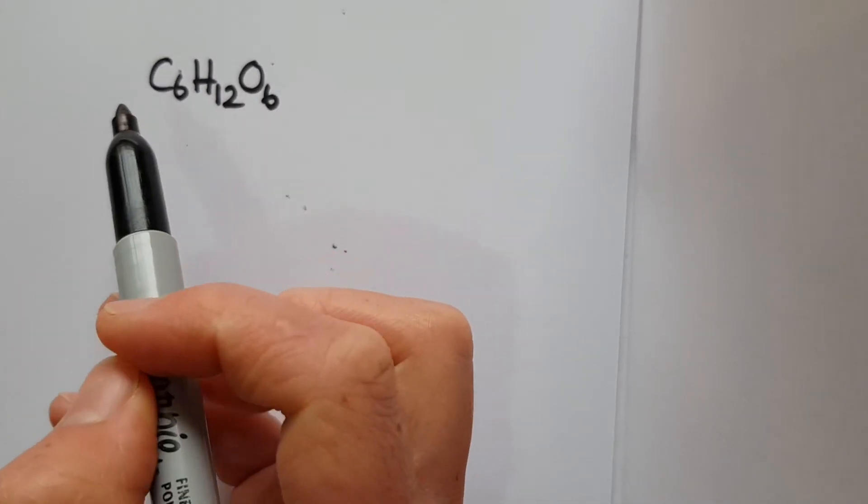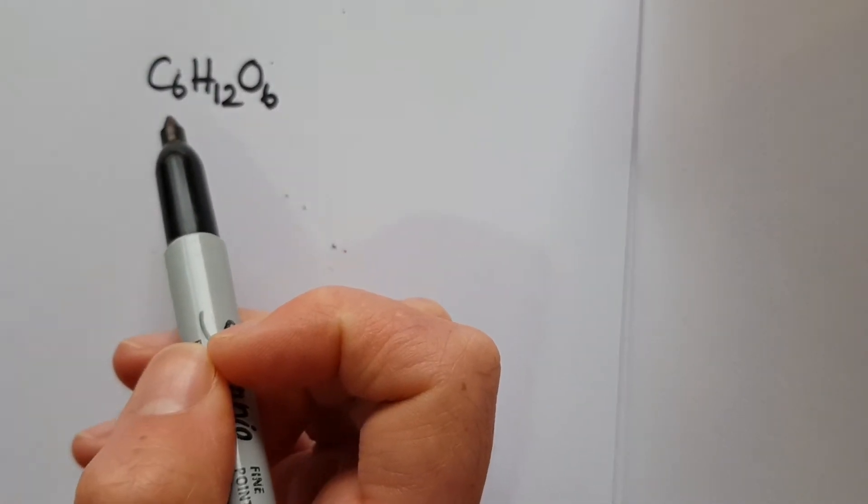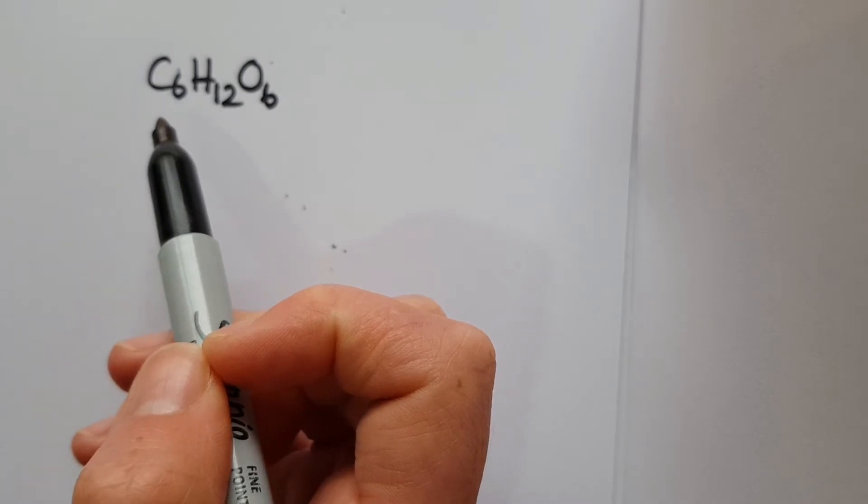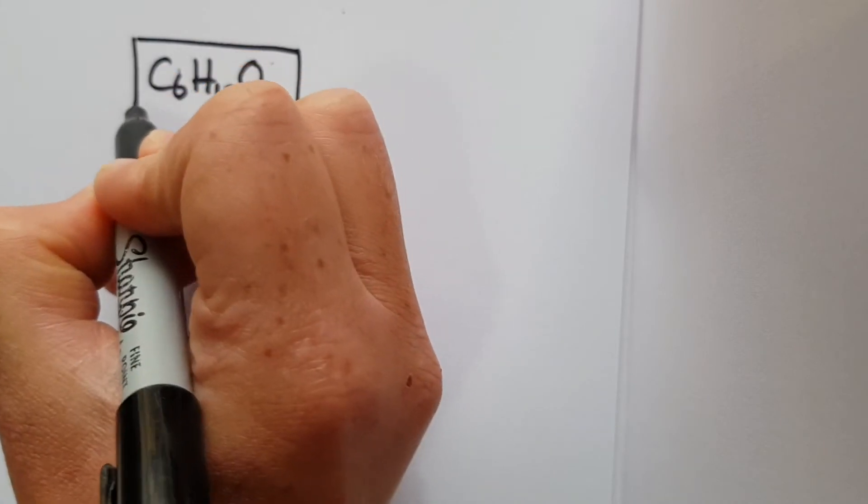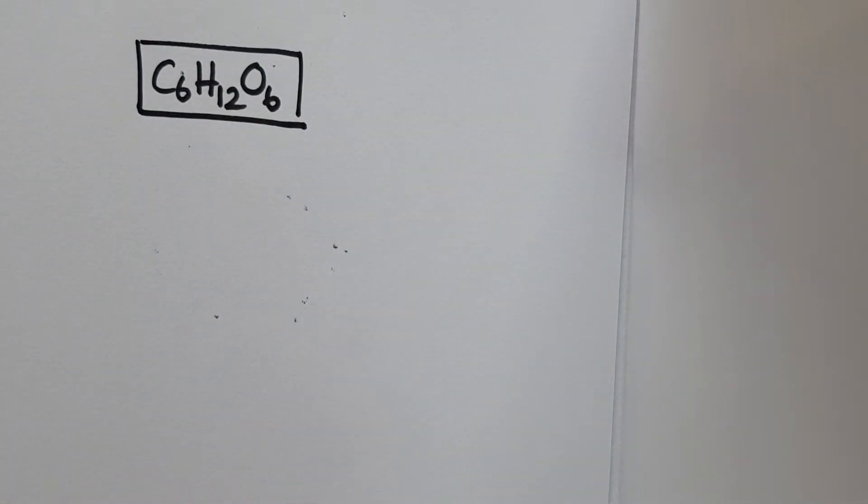Hi, and today we're going to look at glucose and its chemical structure. So hopefully you're all familiar with this chemical formula here, C6H12O6, which is of course the chemical formula for glucose, which you will have learned in GCSE.